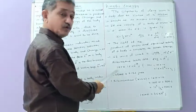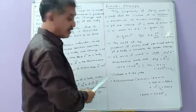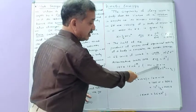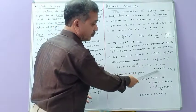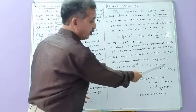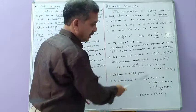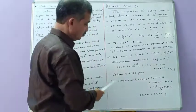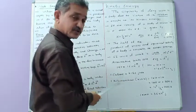In nuclear physics, you will use the unit of energy as electron volt. 1 electron volt equals 1e multiplied by 1V, where 1e is the charge of the electron, 1.6 × 10⁻¹⁹ coulomb, and 1 volt equals 1 joule per coulomb. So 1 electron volt is 1.6 × 10⁻¹⁹ joule.